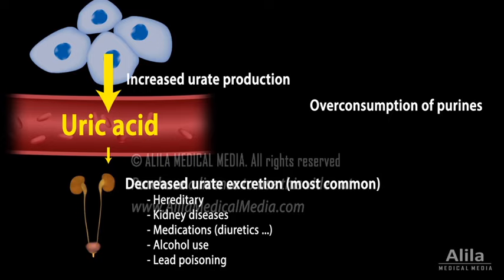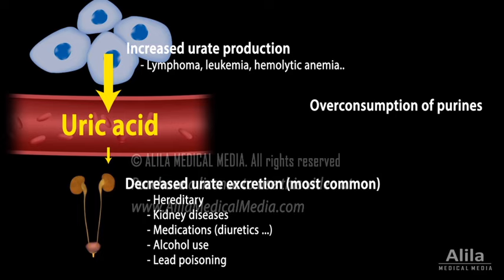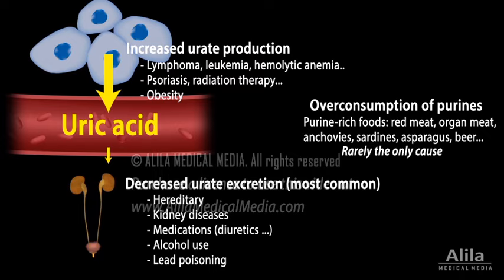Increased production of urate may occur in conditions with abnormally high cellular turnover or cell death, or in obesity, as urate production increases with greater body surface area. Overconsumption of purine-rich foods can contribute to higher urate levels, but is rarely the only cause.